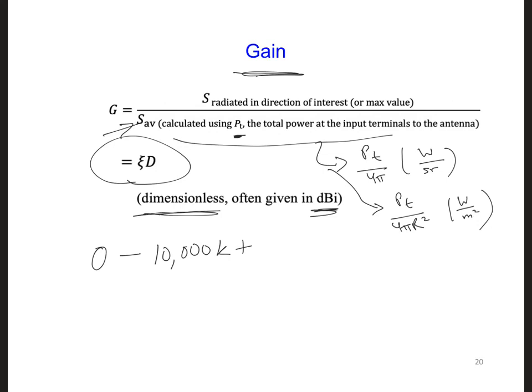And last question, what does it mean to have a gain of 3 dBi in a particular direction? Well, it means the antenna receives 3 dB more or twice as much power than a lossless isotropic antenna in that particular direction.